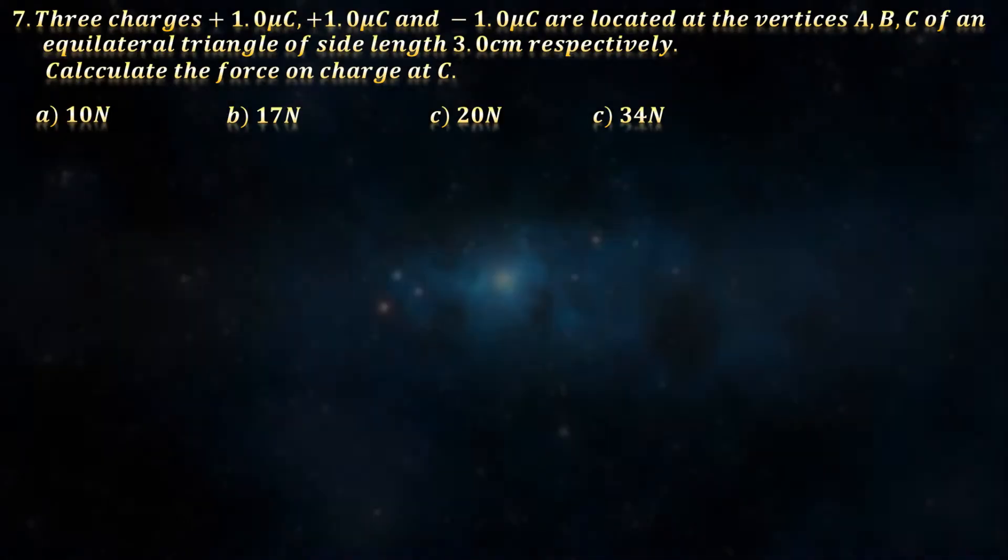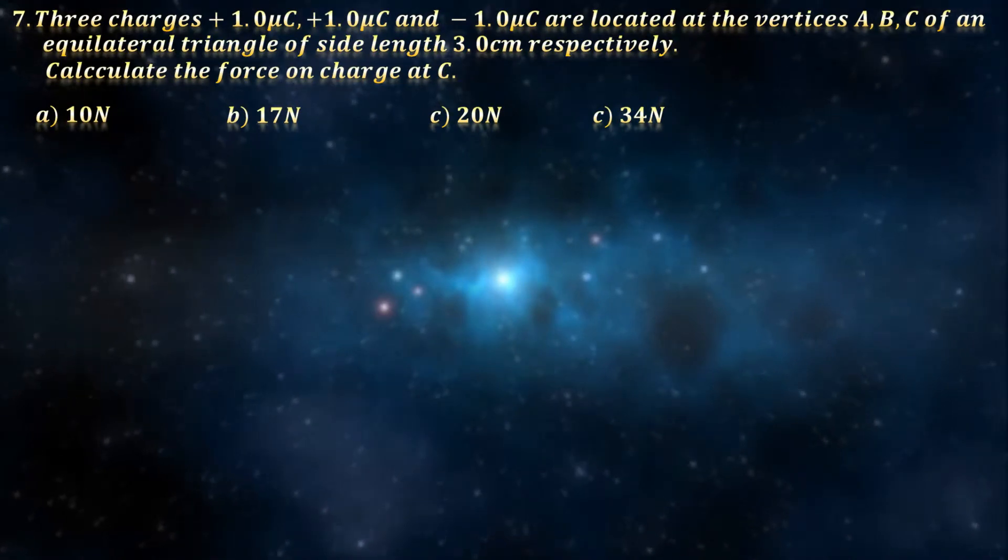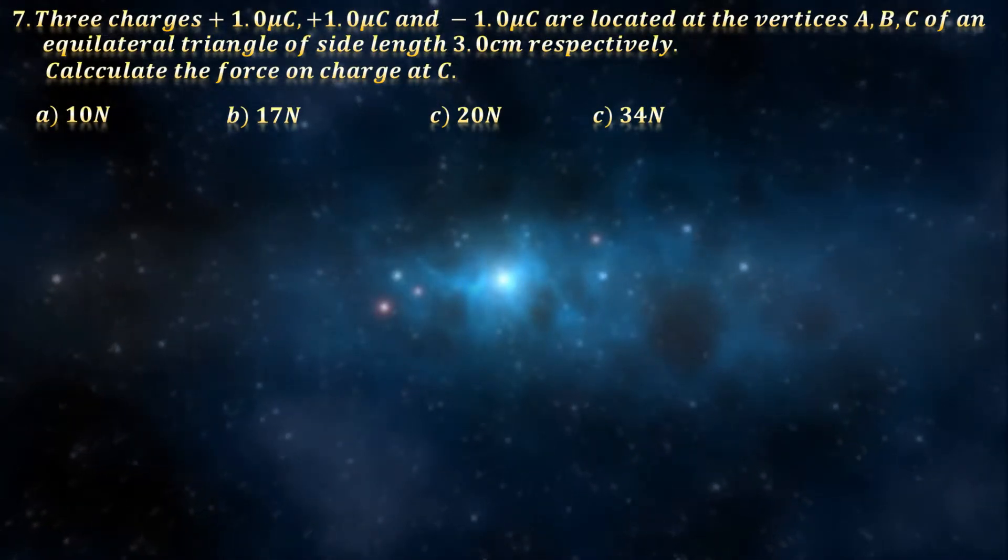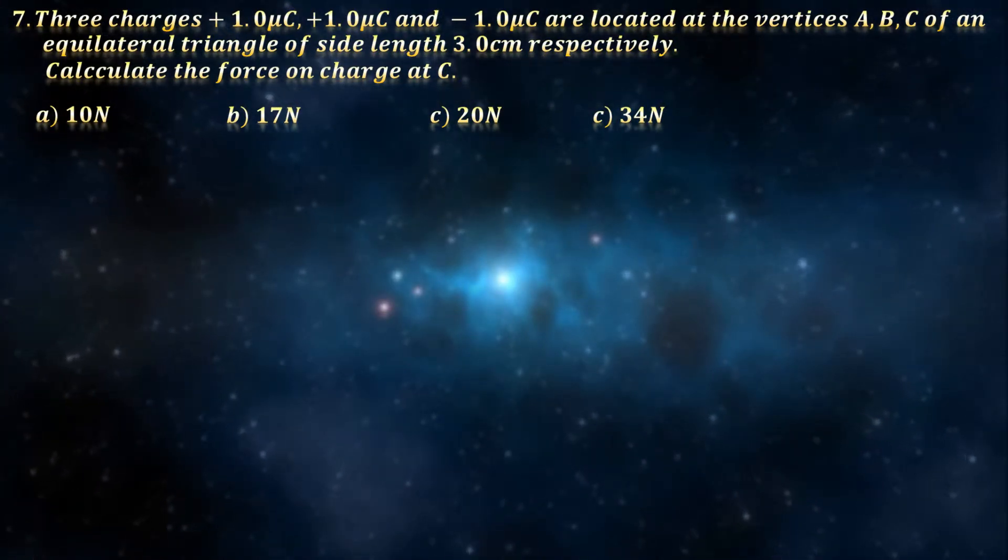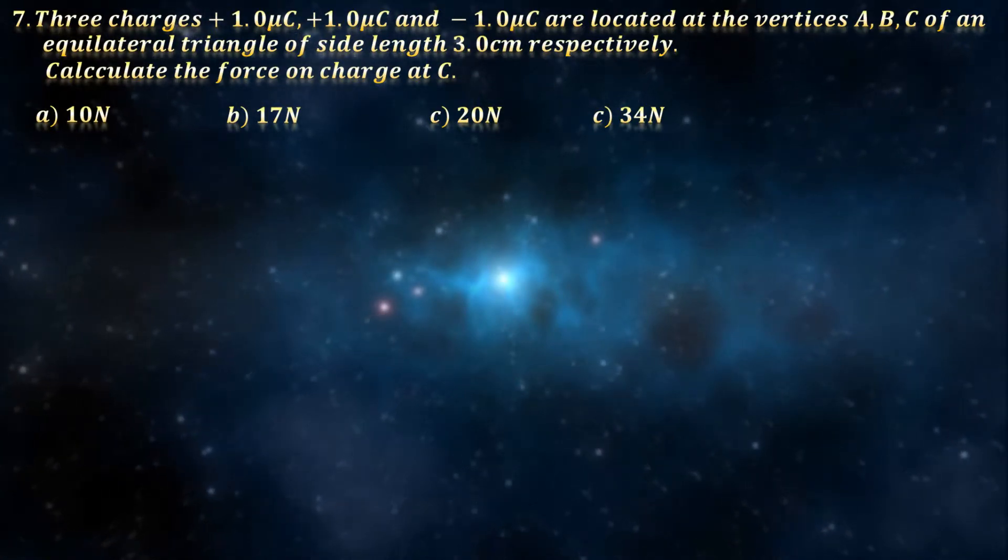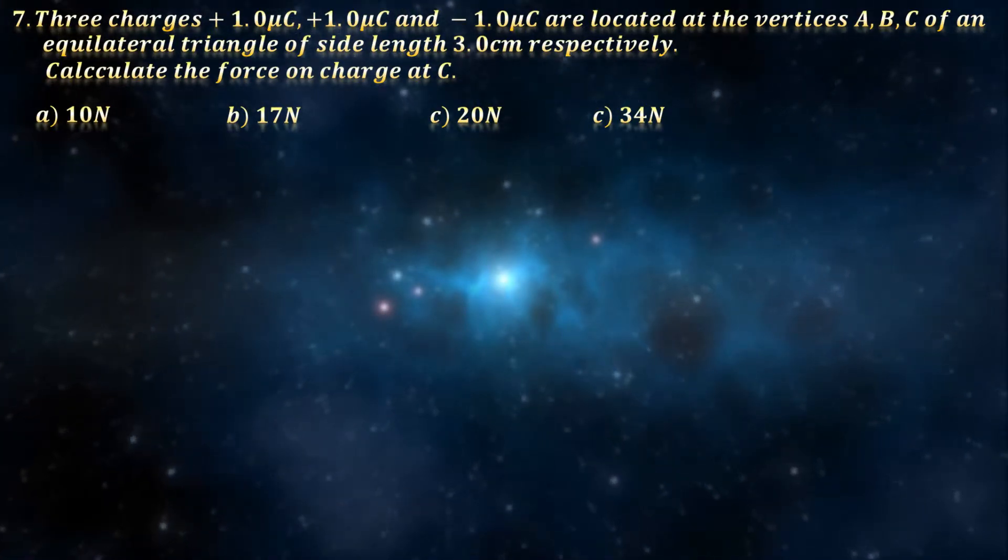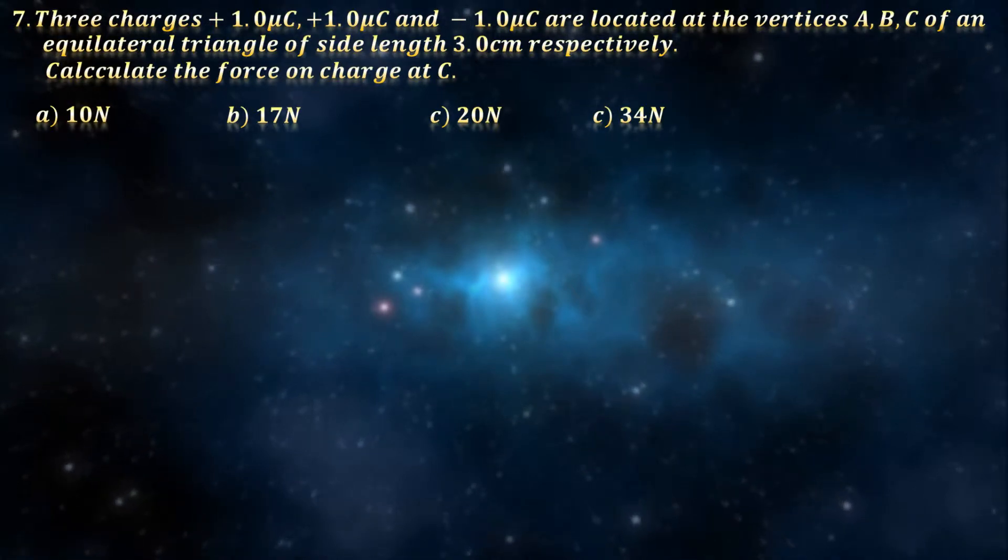Here goes question 7. Three charges +1, +1 and -1 micro coulomb are located at the corners of an equilateral triangle. Our goal is to calculate the force on charge C.